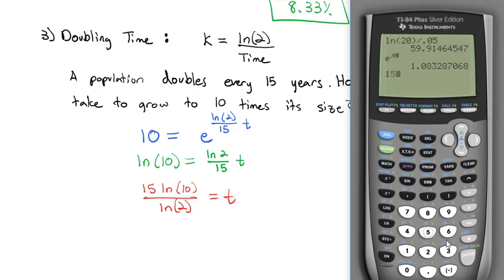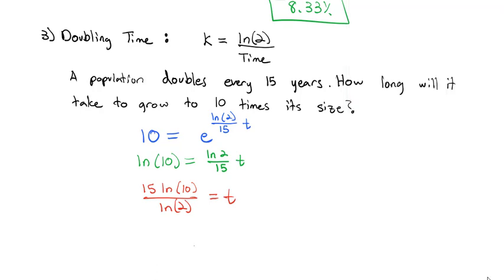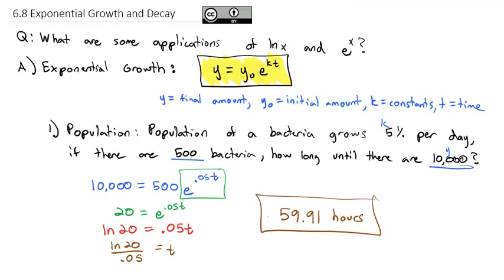Be careful as you type this in the calculator. Make sure you close the parentheses on the natural log before you divide. And that gives me 49.83. So it will take 49.83 years to grow to 10 times its initial size.